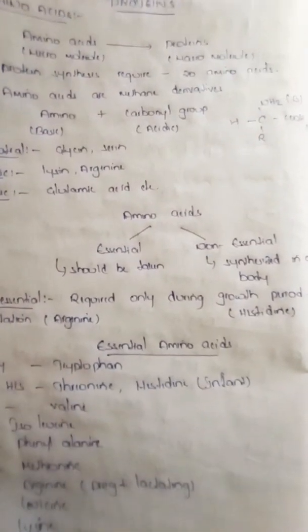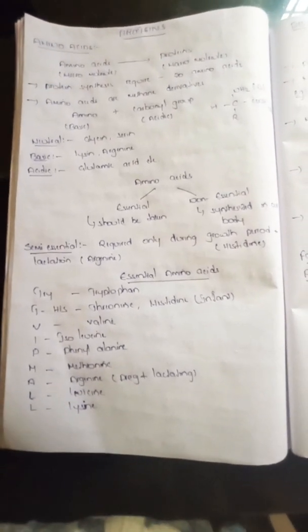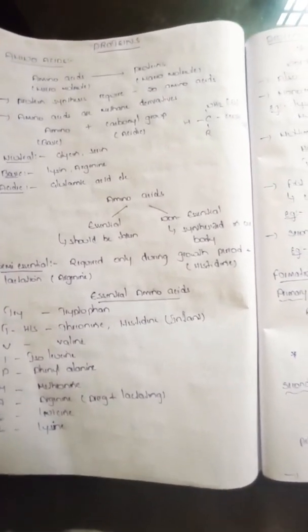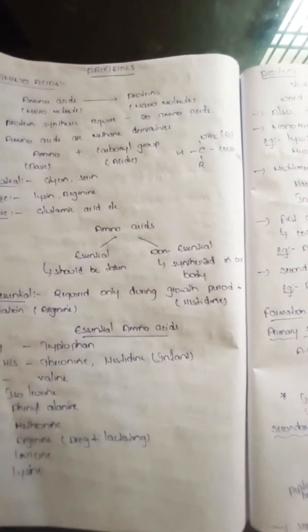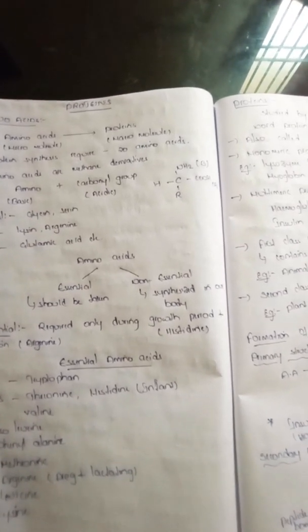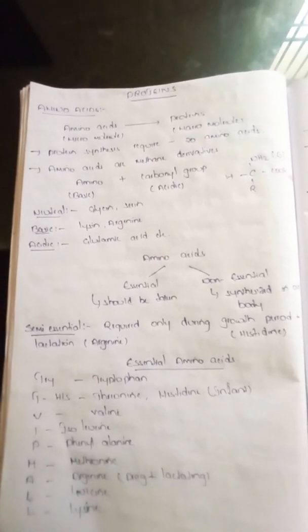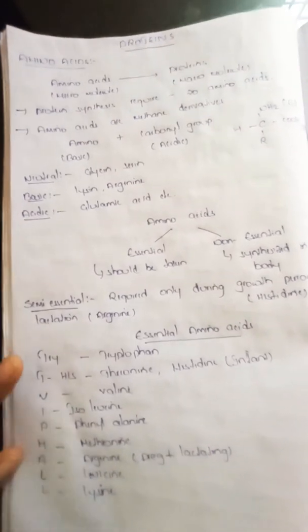There are two types of amino acids: essential and non-essential. Non-essential amino acids are not required from the diet because the body can synthesize them. Essential amino acids cannot be produced in the body, so we must choose to include them in our food.